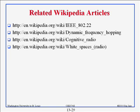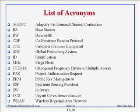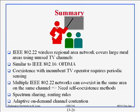These Wikipedia articles have some information about 802.22, although the information is very limited. There is also an article on dynamic frequency hopping, cognitive radio, and white spaces, which are all very related to this topic. From now on every lecture we have put the list of acronyms at the end, so this also has all the acronyms used in this lecture. That's the end — let's see if there are any questions.